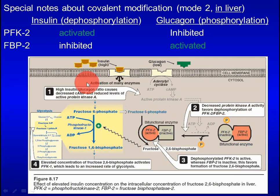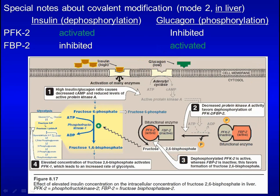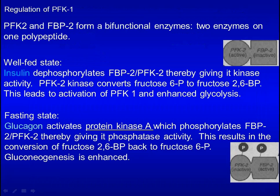What controls phosphorylation of this bifunctional protein? It is insulin and glucagon signaling. During starvation, glucagon signaling is strong, the protein is phosphorylated, FBP2 is active, and glycolysis is not stimulated. During the fed state, insulin signaling is strong, the protein is dephosphorylated, fructose-2,6-bisphosphate is made, and glycolysis is stimulated.